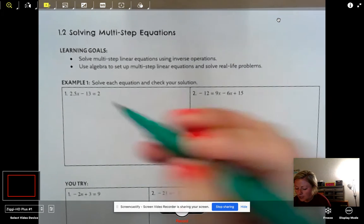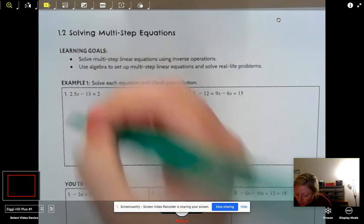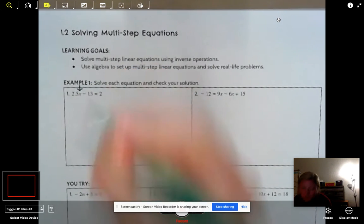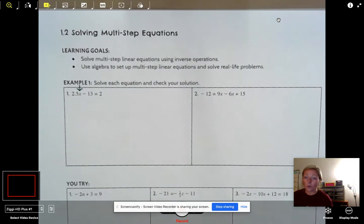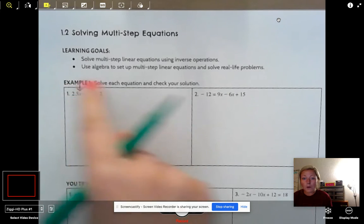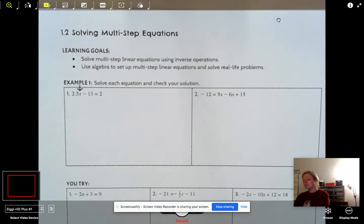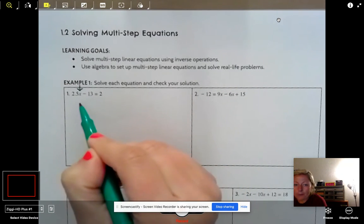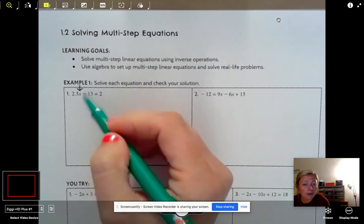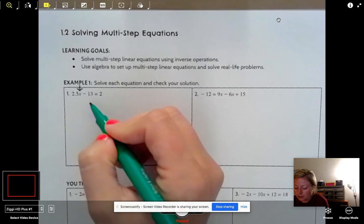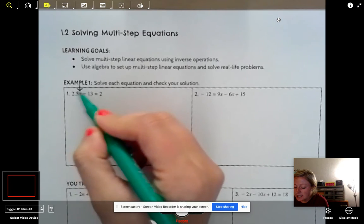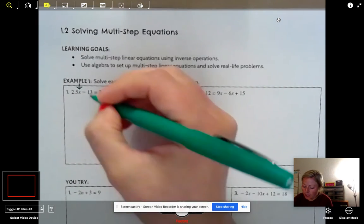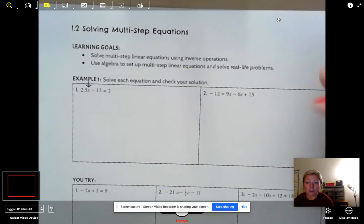So as always, when you solve an equation, you're always getting the variable alone. That's your goal. We want to figure out what is x to make this equation true. So we're thinking, what do I do first? Do I move this 2.5 over or do I move this negative 13?